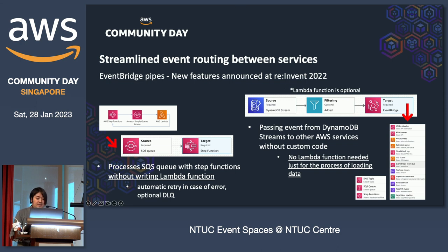Also, in the case where you want to pass data coming from DynamoDB Streams to other AWS services, you would need a Lambda function to log or pass that data to another service. With EventBridge Pipes, you can send records directly to various AWS services such as CloudWatch Logs, Kinesis, Step Functions, and so on. This means you are able to replace even entire microservices with a single EventBridge Pipe.